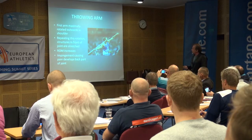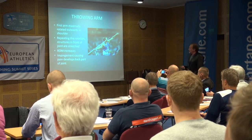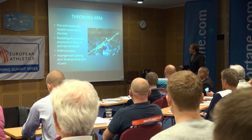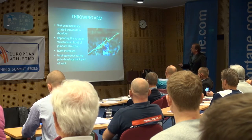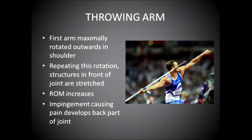First, the throwing arm is maximally rotated outwards in the shoulder. When this outward rotation is repeated very many times, the structures in the front of the shoulder joint can be stretched and injured. The range of motion of the shoulder increases, and this also leads to impingement on the backside of the joint, causing painful states.